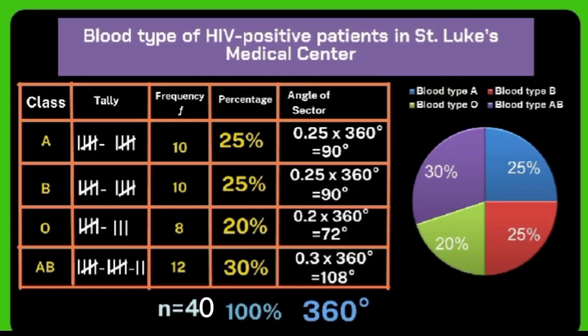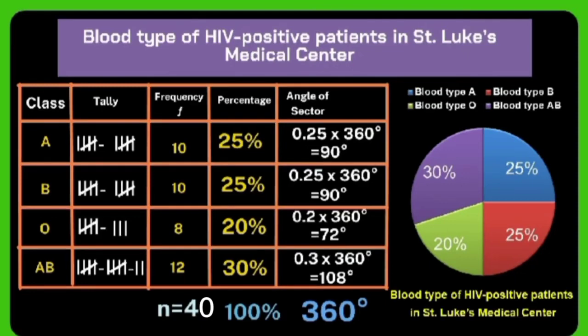This will be the finished output of our pie chart when we use the app Excel. The use of the pie chart in this given situation is to know which blood type has the highest and lowest number of HIV-positive patients. As you can see, there are 4 slices of the whole pie since there are only 4 blood types. This pie chart shows the blood type of HIV-positive patients in St. Luke's Medical Center.